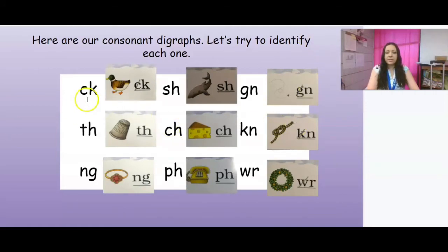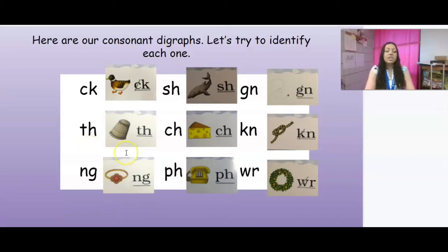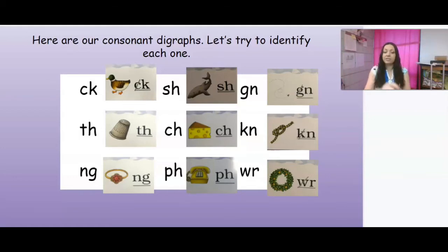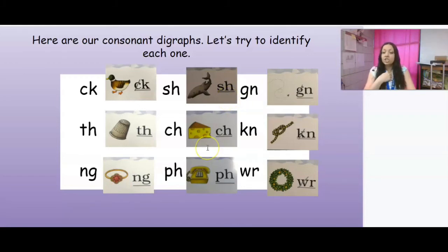Let's try to identify the sounds each digraph makes. We have: duck, 'kuh,' digraph C-K. Thimble, digraph T-H. Remember, T-H has two sounds — the other one is feather, 'v,' digraph T-H, which almost vibrates your lips. Then ring, 'n,' digraph N-G. Shark, 'sh,' digraph S-H. Cheese, 'ch,' digraph C-H. Phone, 'f,' digraph P-H.